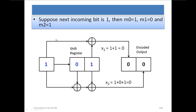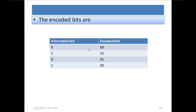Now suppose the next incoming bit is 1, with current state 01 (M1 = 0, M2 = 1). Computing: 1 + 1 = 0 for X1 and 1 + 0 + 1 = 0 for X2, so the output is 00. The 1 shifts to M1 and 0 moves to M2, giving new state 10. In summary: for input bit 0, encoded output is 00; for input bit 1 (state 00), it is 11; for input bit 0 (state 10), it is 01; for input bit 1 (state 01), it is 00. The encoded output always depends on the current state of the shift registers.